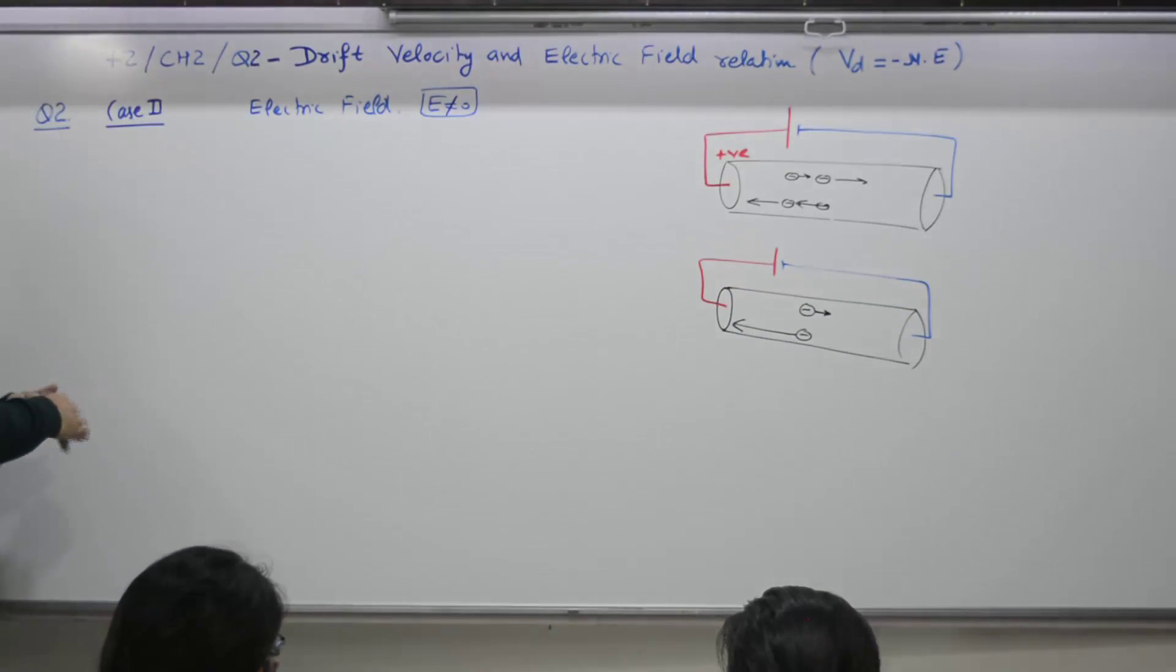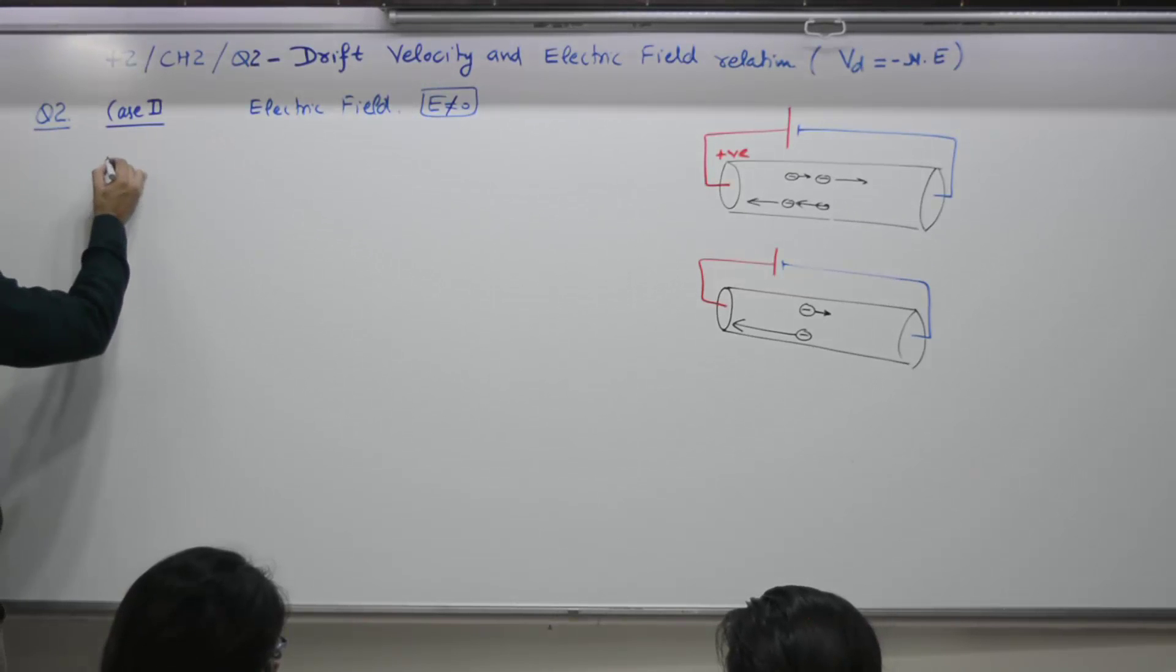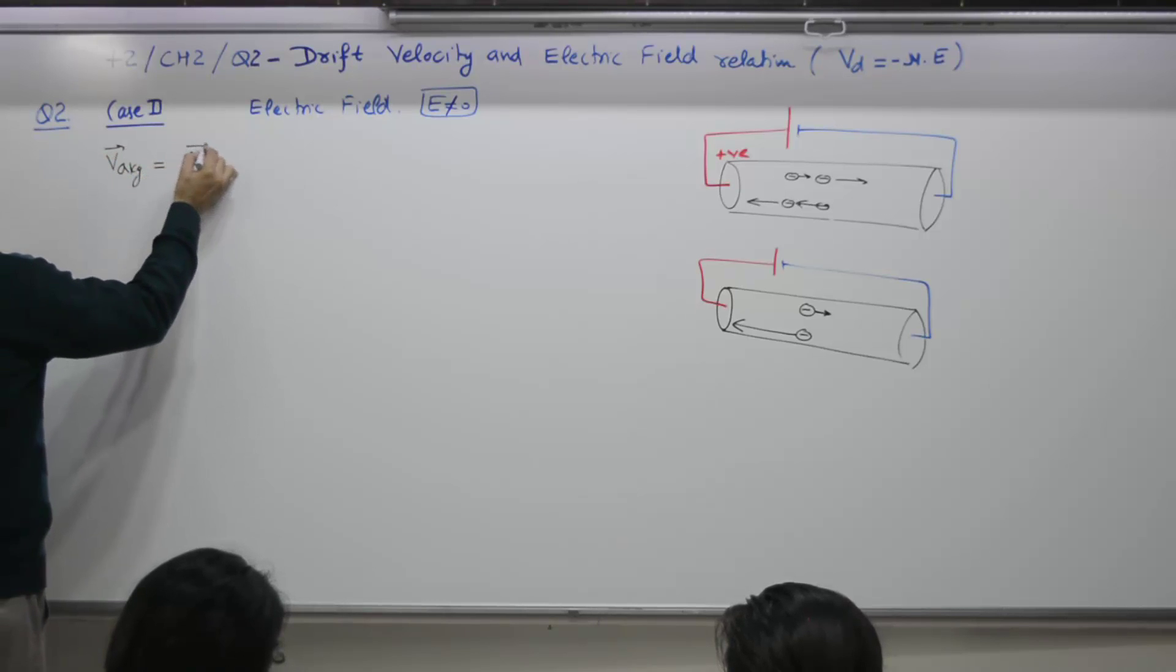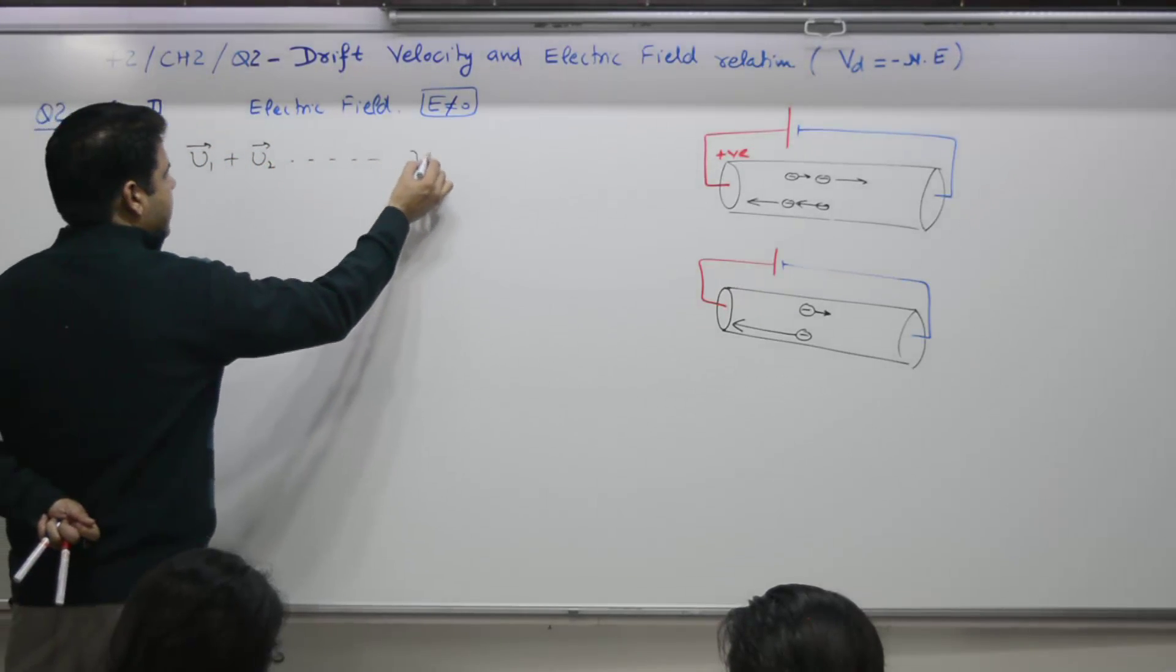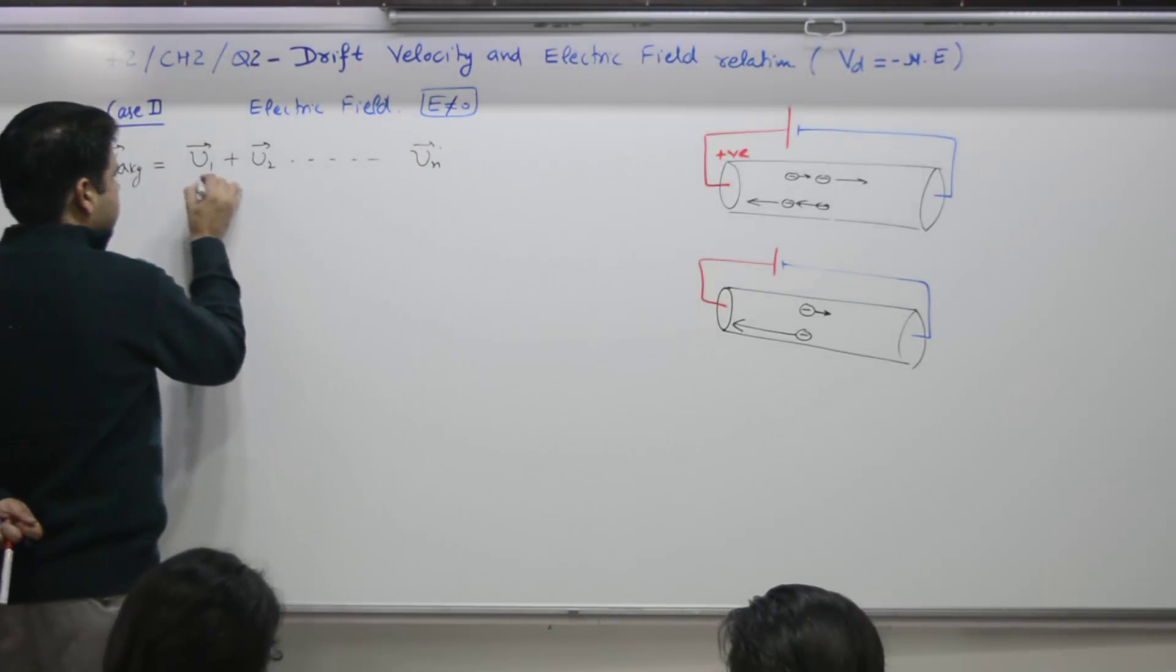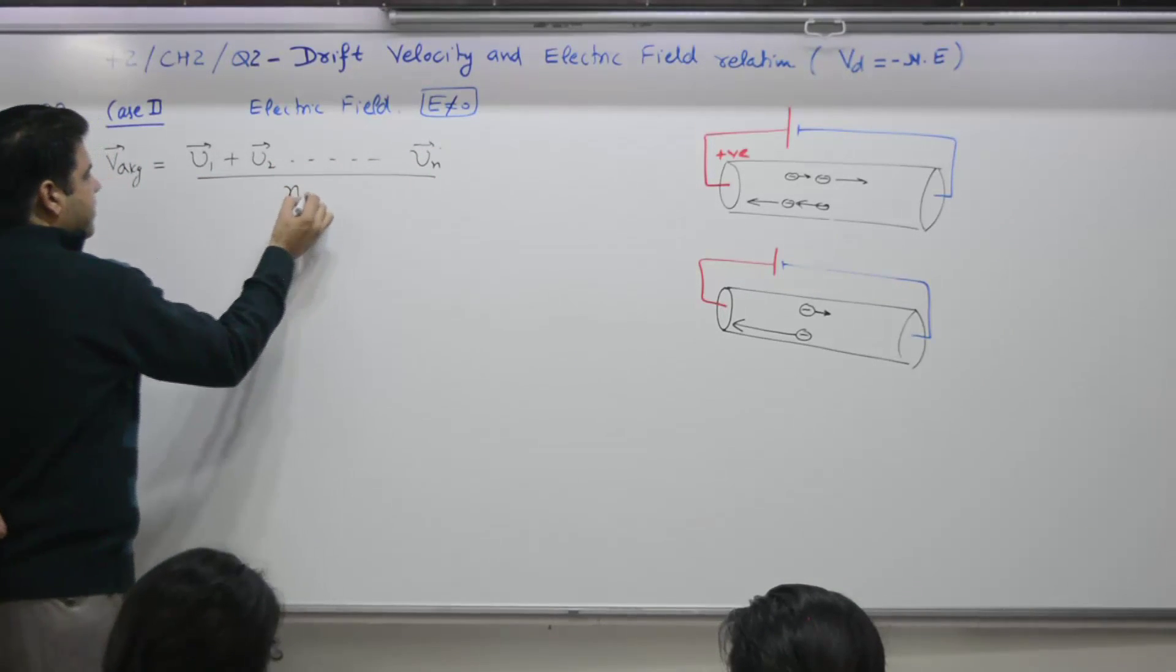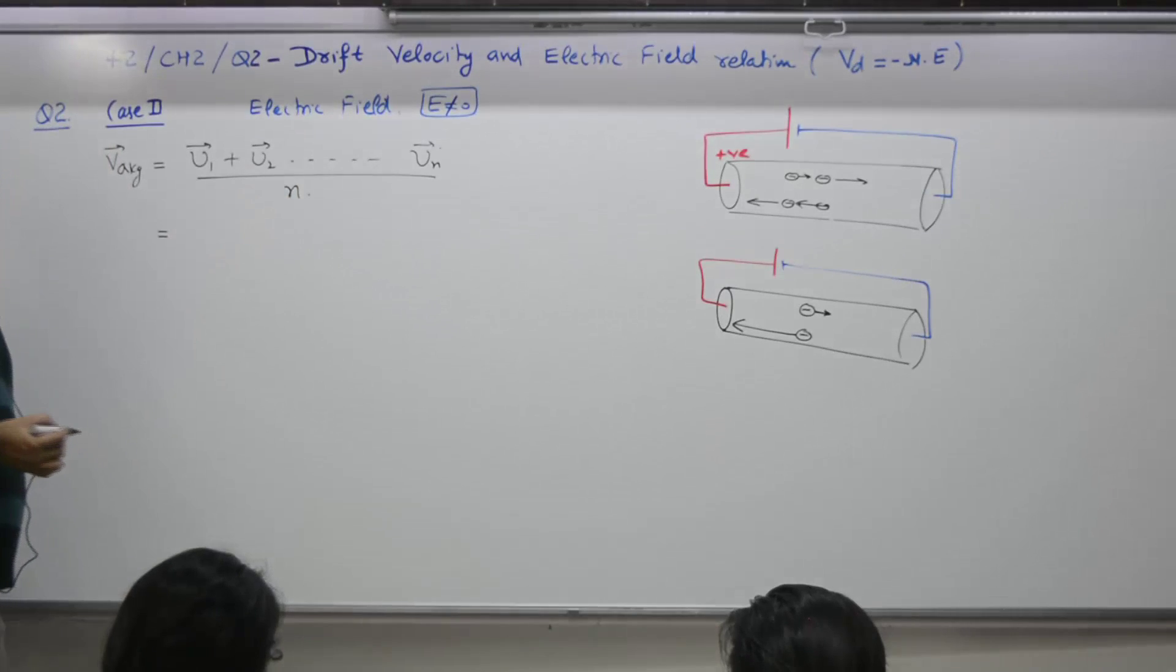Now we want to write expression for average velocity. Average velocity is equal to velocity of particle number 1, velocity of particle number 2. Suppose there are n particles. Then as per definition, sum of all divided by n. Formula for V - V is equal to u plus at.